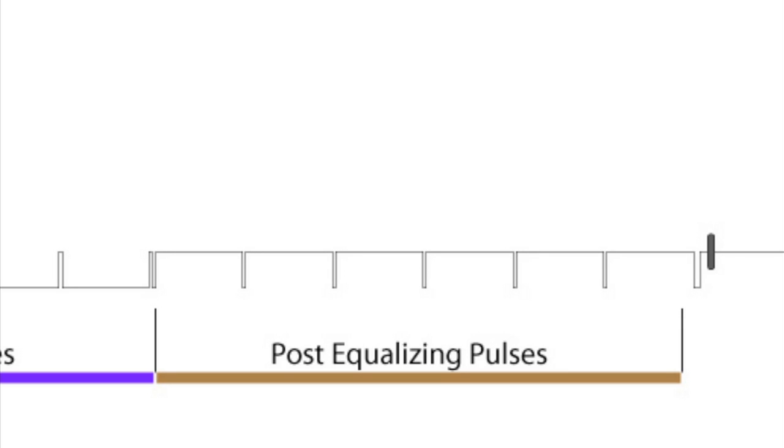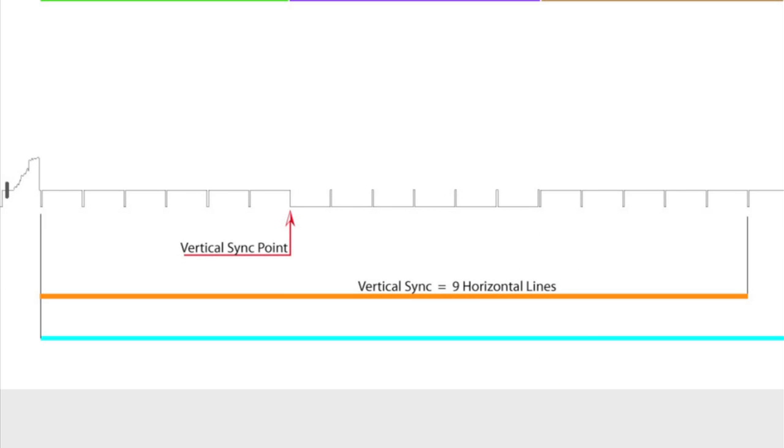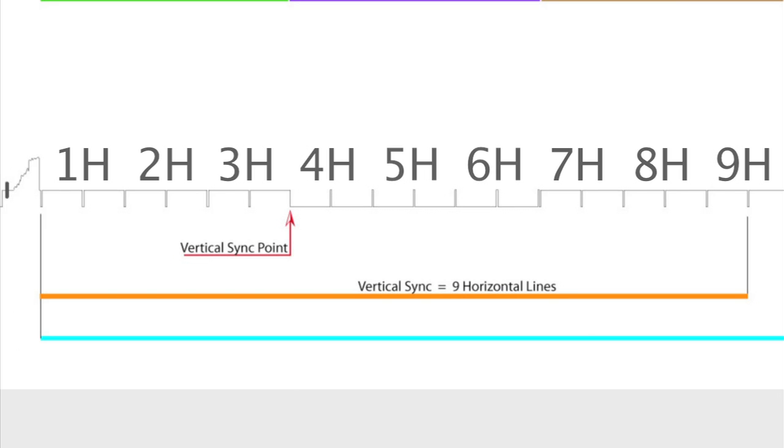The last of vertical sync is comprised of the six post-equalizing pulses which are identical to the pre-equalizing pulses. Altogether, there are 18 pulses that make up vertical sync, taking up a total of nine horizontal lines.